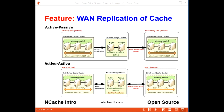If your application is deployed to multiple data centers, multiple Azure regions, or multiple AWS availability zones, NCache lets you replicate the cache across the WAN without slowing down your application in either location. You can deploy NCache in an active-passive or an active-active data center configuration.